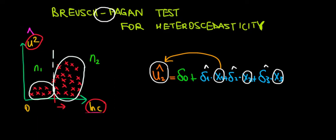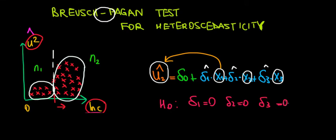So what we're testing is: under the null hypothesis, there is no effect from the independent variables on the variation of the error term. So under the null hypothesis, there is no effect from x1, x2, and x3 — meaning delta 1 must be 0, delta 2 must be equal to 0, and delta 3 must be equal to 0. Under the alternative hypothesis, at least one of them is significant — at least one delta i (1, 2, or 3) is going to be different from 0.